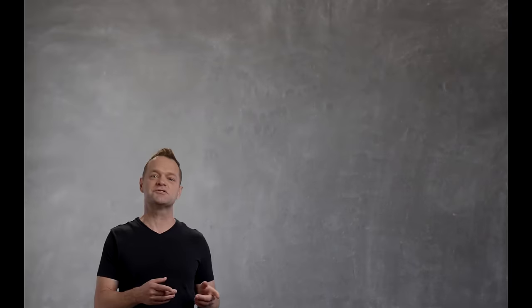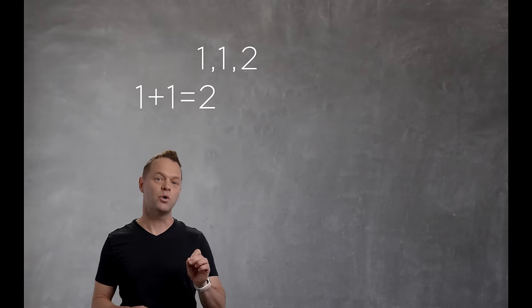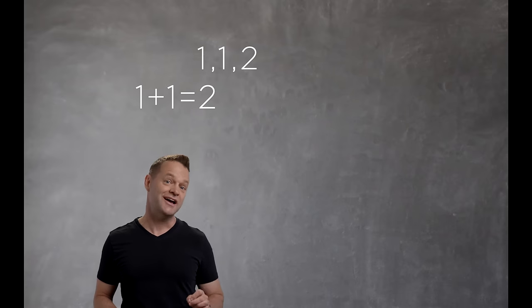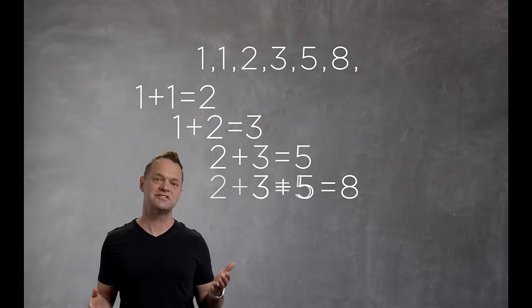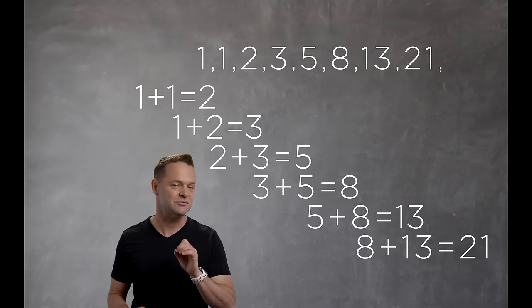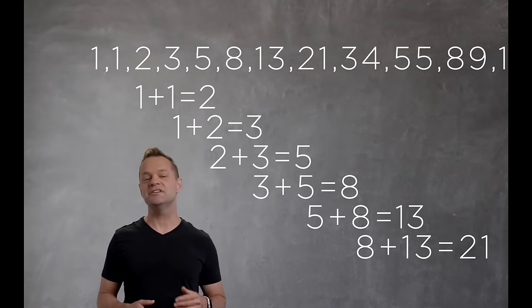Basically, the sequence goes like this. You add the first two numbers, 1 plus 1, and you get 2, and then 3 plus 2, you get 5, and then 5 plus 8 gives you 13, and so on. Pretty simple idea. The sequence literally never ends.